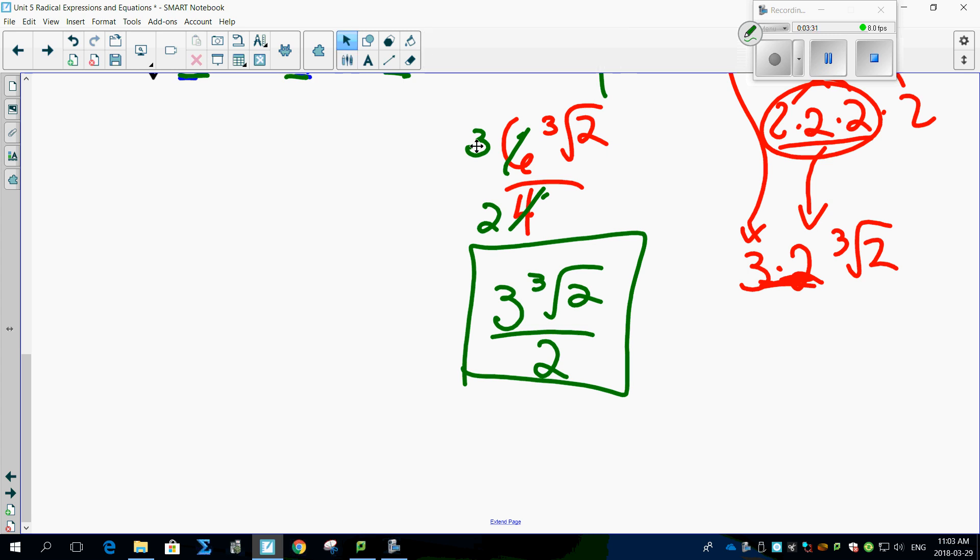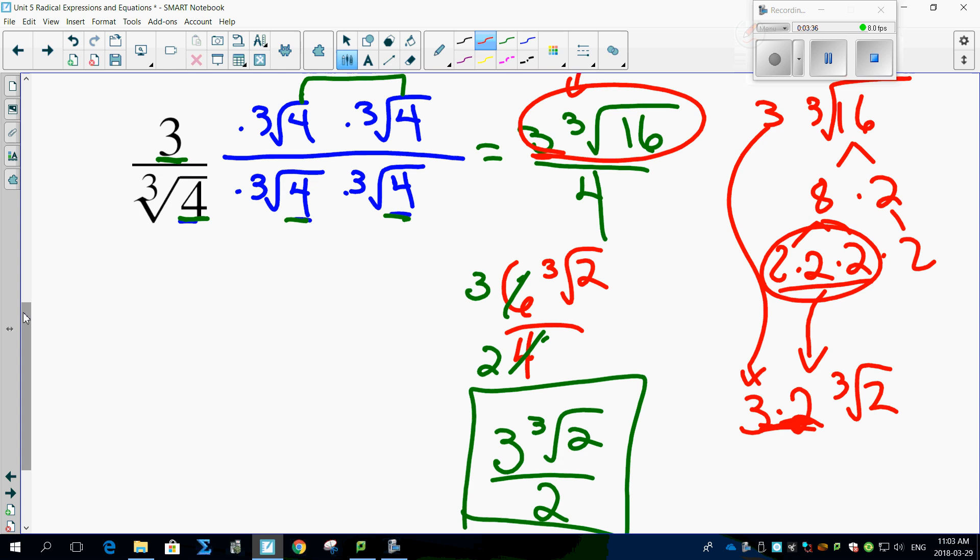But I think the most important thing to realize here, folks, is this. To get rid of a cube root, you multiply it so that there's, look, 1, 2, 3 of them. That's probably the most important thing there.